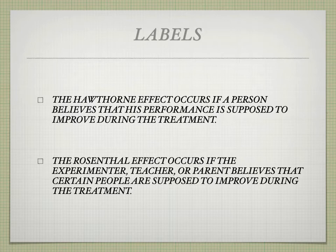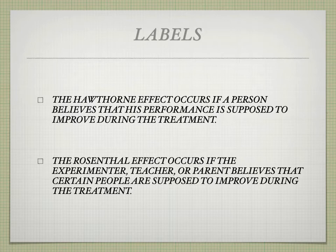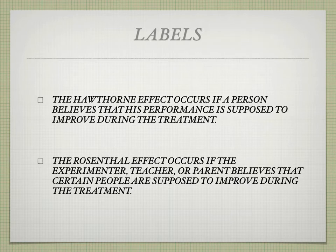Here are two problems with labels. One, the Hawthorne effect occurs if a person believes that their performance is supposed to improve during treatment — and conversely, if they believe it's going to decrease, it may well decrease if they're given a label saying they are not effective learners or performers. Secondly, the Rosenthal effect occurs if the teacher or parent believes certain people are supposed to improve or not improve. Teachers told their class were the best students ended up being just that, and conversely, students labeled lowest performed poorly.